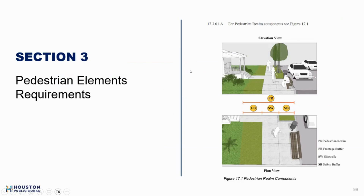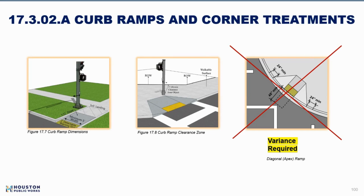Section 3 moves pedestrian requirements earlier in the chapter since they impact nearly every project, whereas bikeways and transit are more specific. Many requirements are not new, but much more clarity has been provided for ADA infrastructure — curb ramps and wheelchair ramps. Non-directional ramps that may point a blind person directly into the middle of an intersection are no longer supported. Best practice and now the standard is to provide directional curb ramps that guide all pedestrians, and most critically blind pedestrians, in the direction of safe travel.